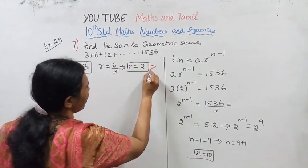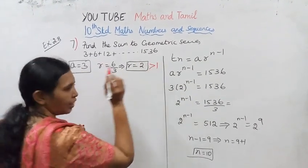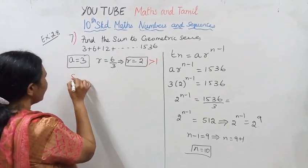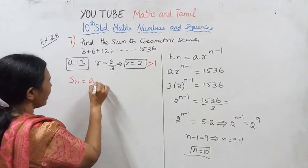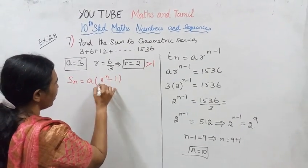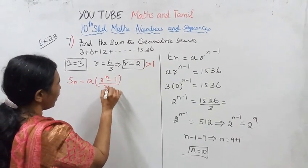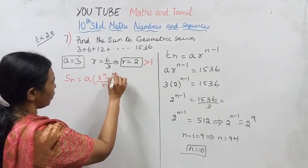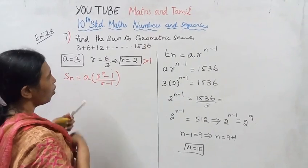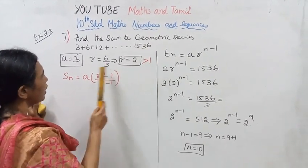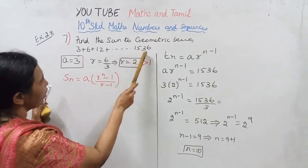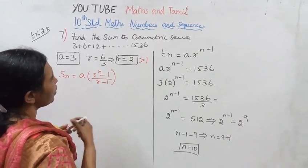Since r is greater than 1, we use the formula Sn equals a times (r^n minus 1) divided by (r minus 1). This is the formula we apply when r is greater than 1, for the series 3 + 6 + 12 + ... up to 1536.